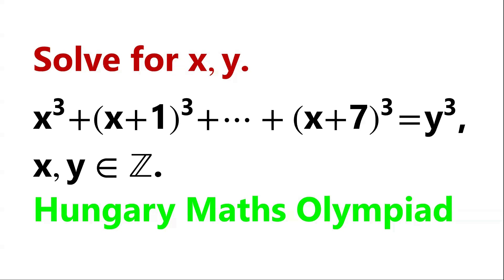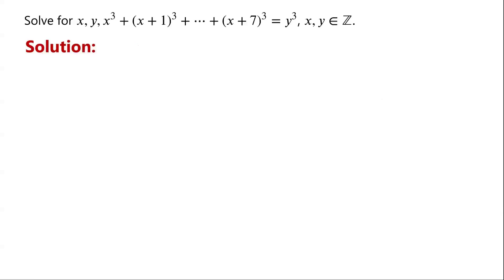Solve this equation, where x and y are integers. This is a Diophantine equation. There are two variables in one equation. How do we solve this equation?